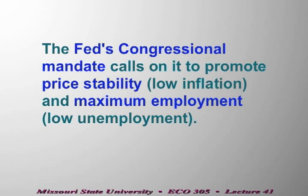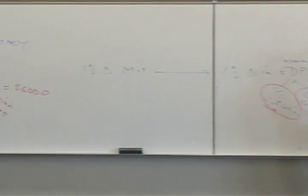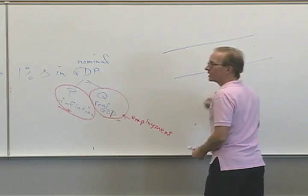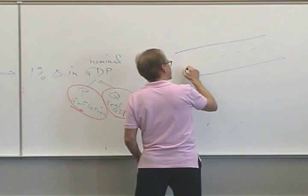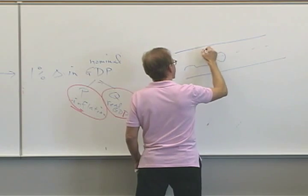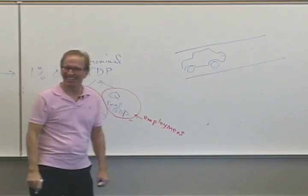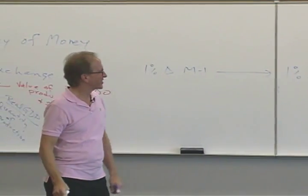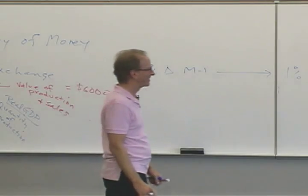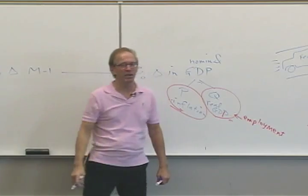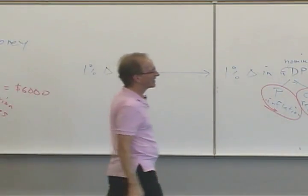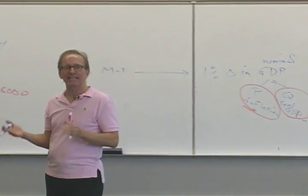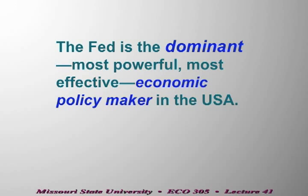The Federal Reserve is our most effective and dominant economic policy maker. You can think of the Fed as driving a car — the car is the economy. The President can recommend things to Congress, and Congress passes laws, but that process can take about two years. The Federal Reserve has FOMC meetings every six weeks, and the Vice President of the New York Fed can make it happen that same week.